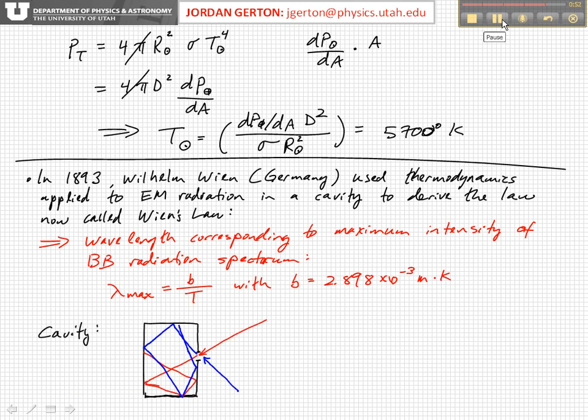Now some of you may sort of wonder how a cavity can be a good model for black body radiation. So here I've tried to kind of draw what's going on. So imagine you have a cavity, basically a box with a small hole in it. Well, if light enters this hole, it will reflect off the walls until basically it gets completely absorbed.